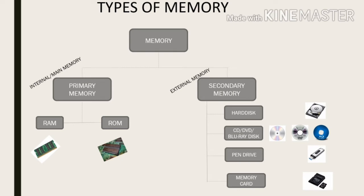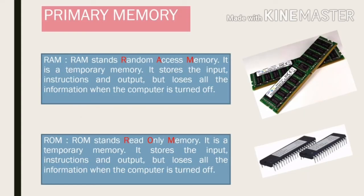Now we will talk about types of memory. A computer has two types of memory: number one, primary memory, and number two, secondary memory. Primary memory is also called internal or main memory. It is of two types: RAM and ROM. Whereas secondary memory is also known as external memory, which stores any information or data permanently. It has many types like hard disk, CD, DVD, Blu-ray disk, pen drive, and memory card. Let's know about these devices individually.